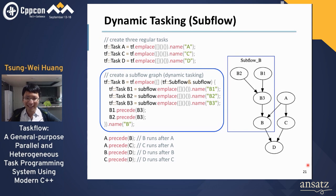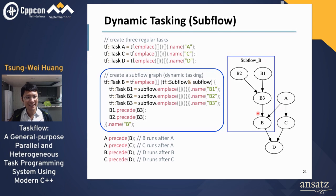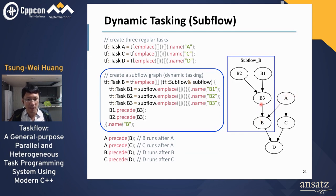The previous example was static tasking. We can also do dynamic tasking — you can spawn a task dependency graph from the execution of a task using the dedicated interface called subflow. To create a subflow, you emplace a lambda with a subflow argument and describe another task dependency graph inside it. For example, we can create another task dependency graph from the execution of task B, where the subflow has three tasks B1, B2, and B3, where B3 runs after B1 and B2. Eventually the subflow joins its current task B.